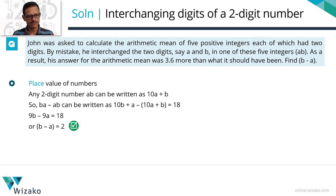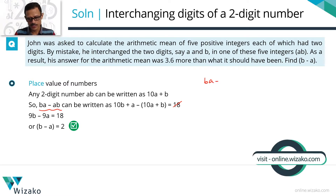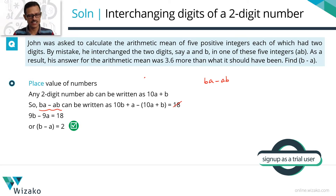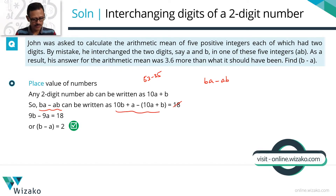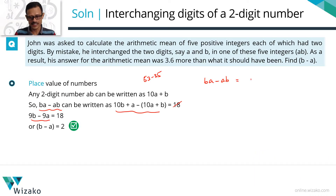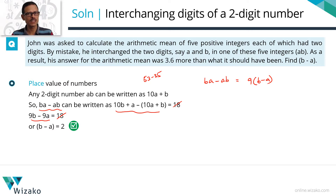Now let's do the derivation. The left-hand side, BA minus AB, is the difference between a number and the version with digits interchanged — for example, 53 and 35. This left-hand side equals 9(B − A). So the first nifty derivation: if you have a two-digit number and another formed by interchanging its digits, the difference is always the 9th multiple of the difference between the two digits.